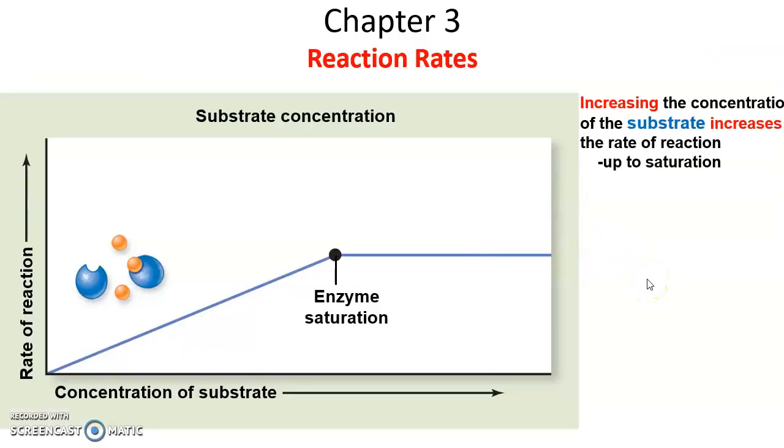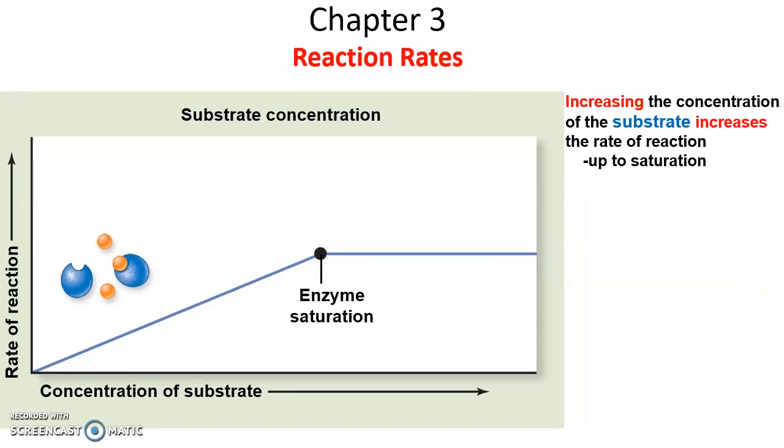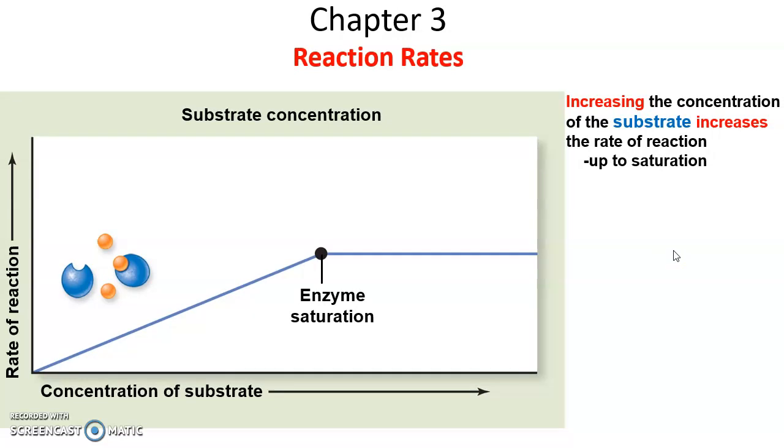Enzymes function at a particular rate, a particular speed in converting substrates into products. Various conditions can affect the reaction rate. For instance, the concentration of the substrate. You can increase the concentration of the substrate and keep increasing it, and it will cause the reaction to go faster and faster until you reach saturation. If you have 100 enzymes, once you have 101 substrates, you've reached saturation. It can't go any faster. Increasing the concentration of the substrate increases until you reach saturation.